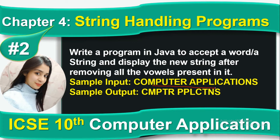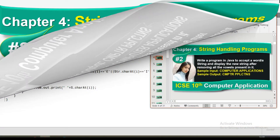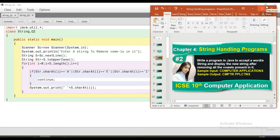According to the program, what we have to do is write coding to remove vowels from the string — whatever vowels are present inside it. After removing them, the new string that is formed needs to be printed. For example, the input string had vowels a, e, i, o, u — all removed — and a new string is formed and printed.